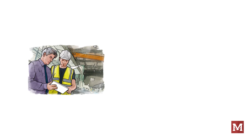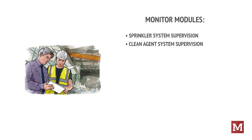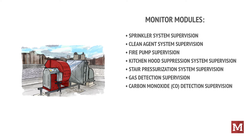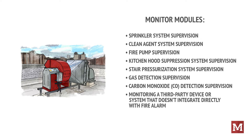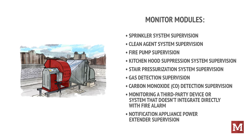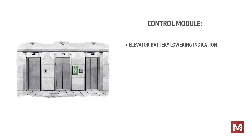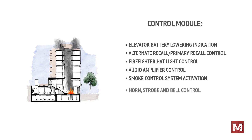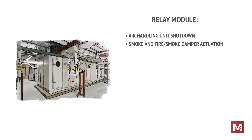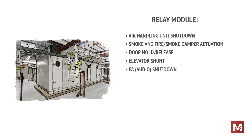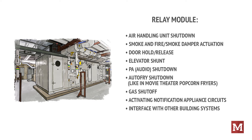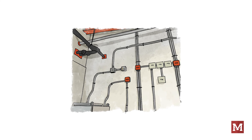Examples of monitor module applications include sprinkler system supervision, clean agent system supervision, fire pump supervision, kitchen hood suppression system supervision, stair pressurization system supervision, gas detection supervision, carbon monoxide detection supervision, and monitoring a third-party device or system that doesn't integrate directly with a fire alarm. Control module applications include elevator battery lowering indication, alternate recall, primary recall, firefighter hat light control, audio amplifier control, smoke control system activation, horn, strobe, and bell control, and fire suppression system releasing service. Relay module applications include air handling unit shutdown, smoke and fire damper actuation, door hold release, elevator shunt, public address system shutdown, auto-fry shutdown, gas shutoff, activating notification appliance circuits, interface with other building systems, and high-speed fan shutdown.